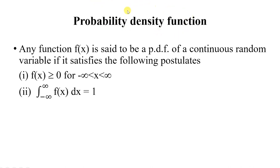While discussing probability mass function, we defined the function as p(x). Here we define the function as f(x). Both p(x) and f(x) indicate the probability distribution. Any function f(x) is said to be a PDF if it satisfies the following conditions.